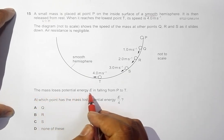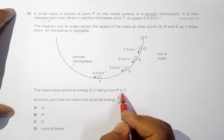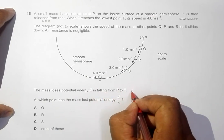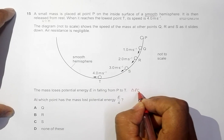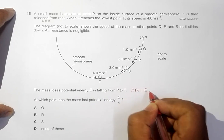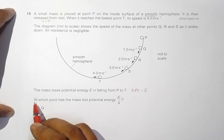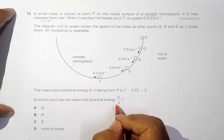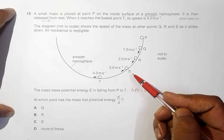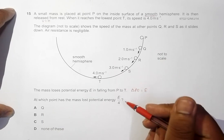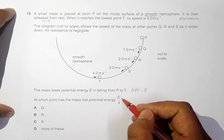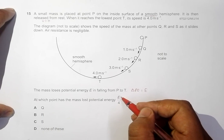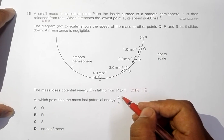The mass loses potential energy E in falling from P to T. So we have delta potential energy equal to E. We have to determine at which point the mass has lost potential energy E by 4, meaning at which point it has lost 1/4 of the total PE lost during the whole descent.